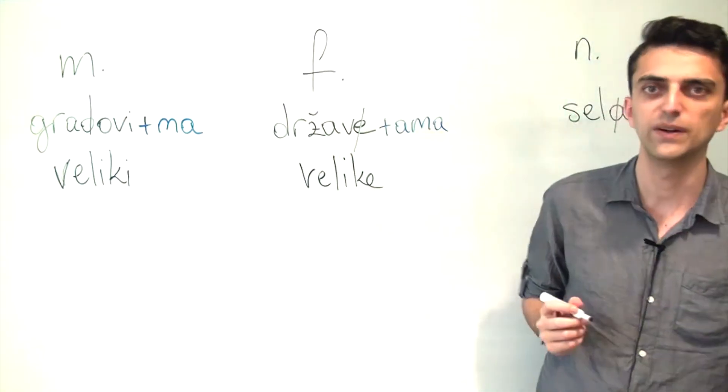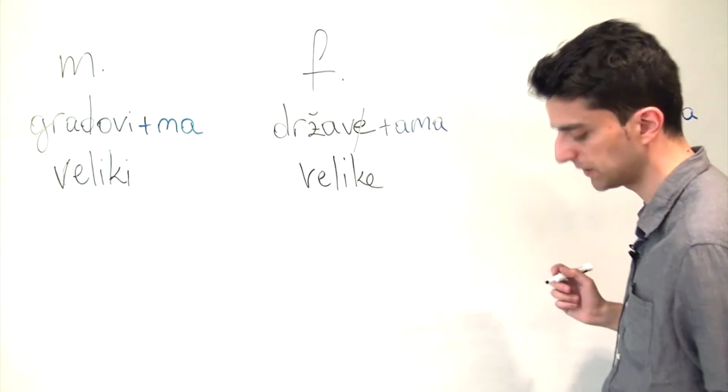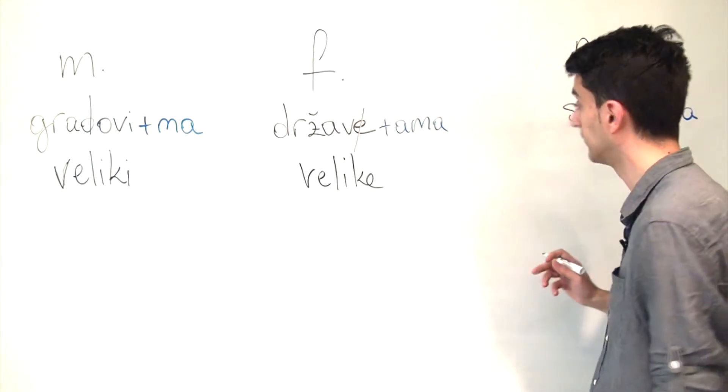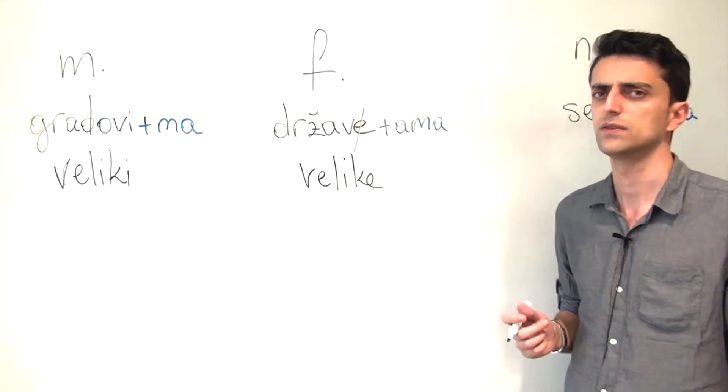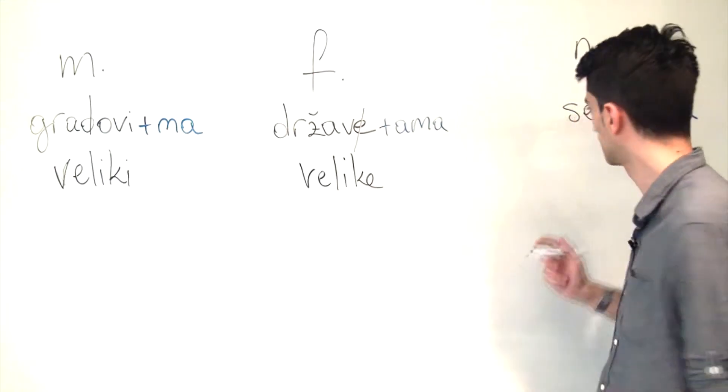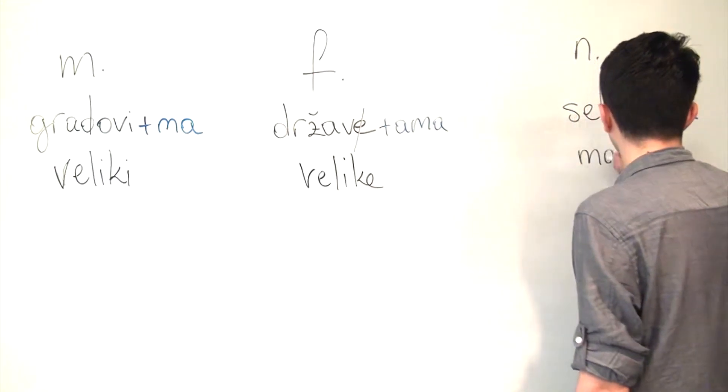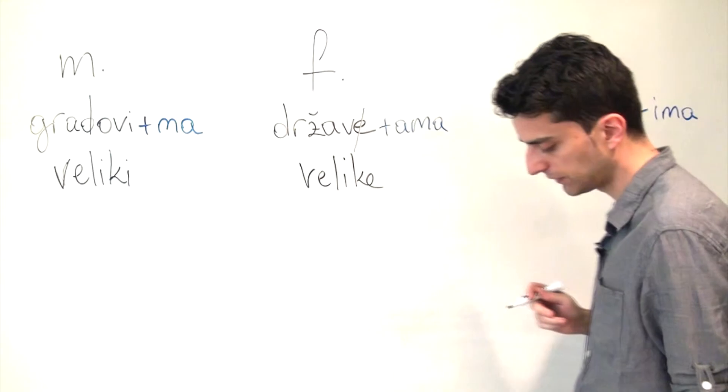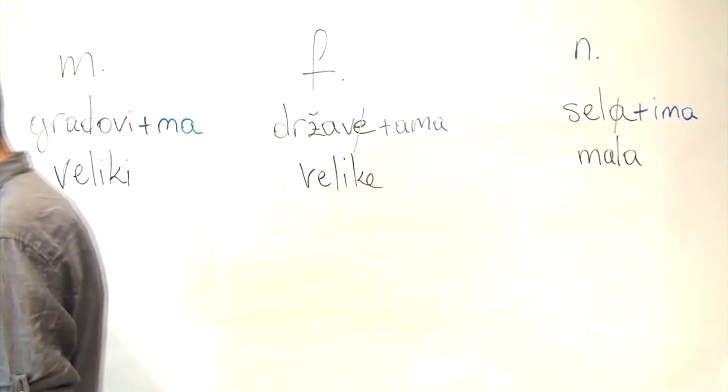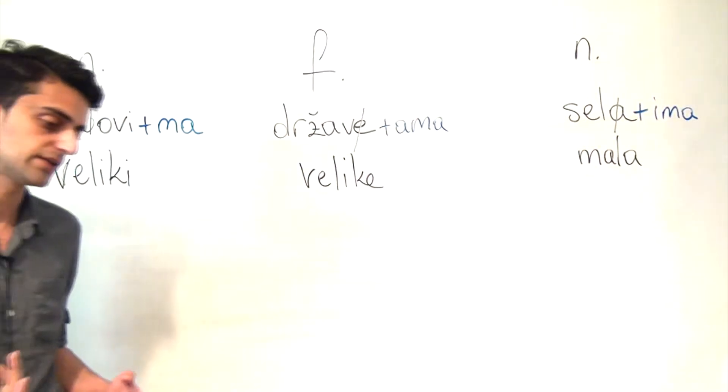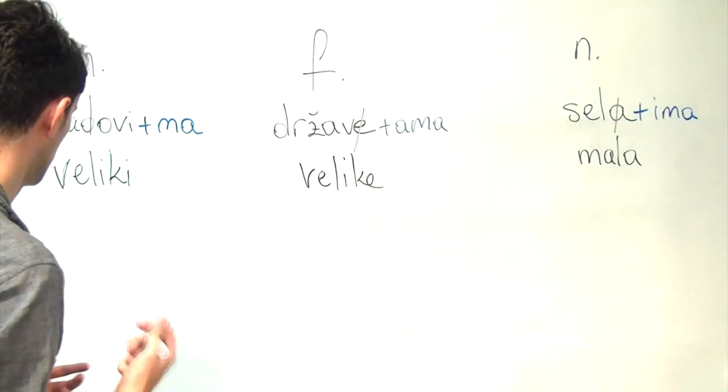And since villages can't really be large, it wouldn't really make much sense to use velika in this particular case. So let's use mala or small. So how do we turn these adjectives from the nominative case into the locative case?